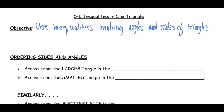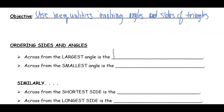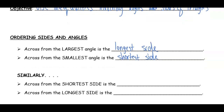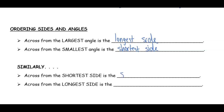There are a couple of basic things about ordering sides and angles. Across from the largest angle is the longest side. Across from the smallest angle is the shortest side. Similarly, across from the shortest side is the smallest angle, and across from the longest side is the largest angle.